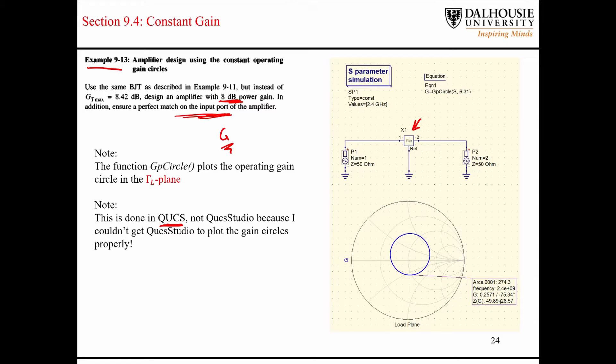So in QUCS, apparently in QUCS Studio as well, I just couldn't get it to work. But there's a function called GPCircle, and this plots the operating gain in the gamma L plane. So it's very useful for this problem, for what I'm trying to demonstrate here today.